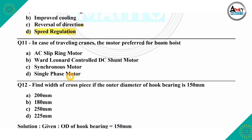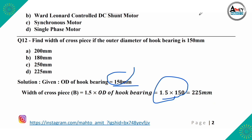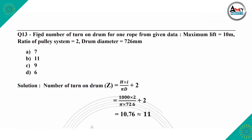The next question: find the width of the cross piece when the outer diameter of the hook bearing is 150 mm. The four options are 200 mm, 180 mm, 250 mm, and 225 mm. The width of the cross piece equals 1.5 times the outer diameter of the hook bearing. So 1.5 × 150 mm = 225 mm. The correct answer is 225 mm, which is option D.